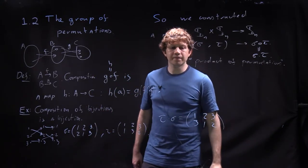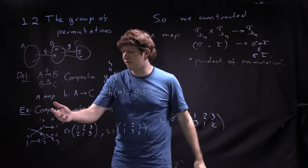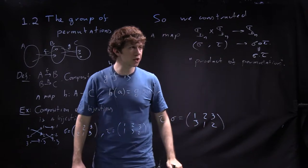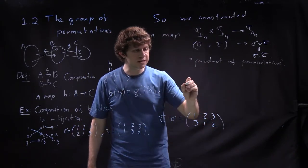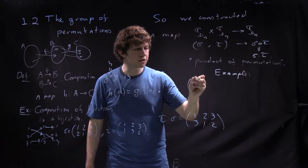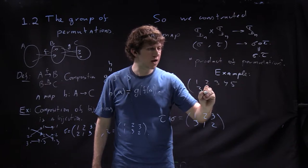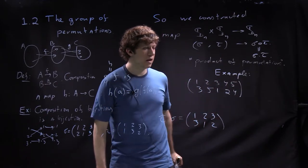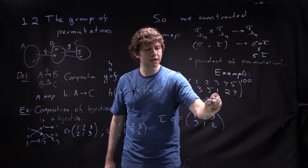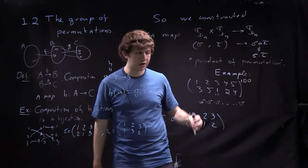Interesting things can happen. For instance, I can take one permutation and apply it many, many times — that will be called a power of a permutation. For example, take the permutation sending 1, 2, 3, 4, 5 to 3, 5, 1, 2, 4 — wait, let me say 1 goes to 3, 3 goes to 1, 2 goes to 5, 5 goes to 4, 4 goes to 2. Suppose I want to apply it 100 times. If I just keep doing it one after another, that's very hard to compute.